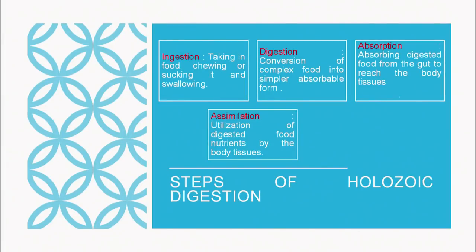The next step in holozoic digestion is assimilation. Assimilation is the utilization of digested food nutrients by the body tissues. Once the absorbed material reaches the cells, further breakdown takes place to release energy or for the body-building process — that constitutes assimilation.